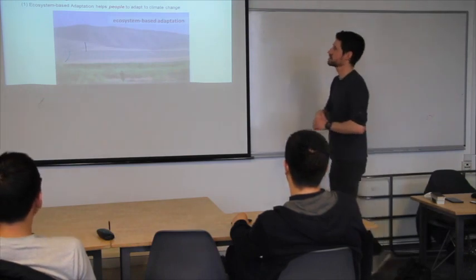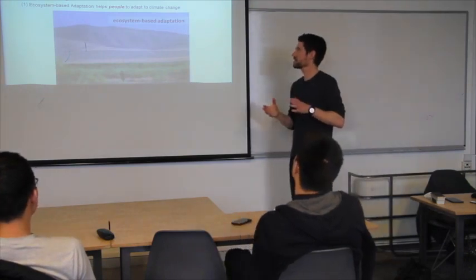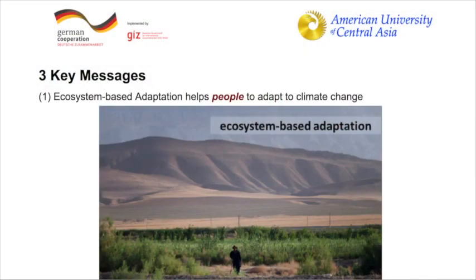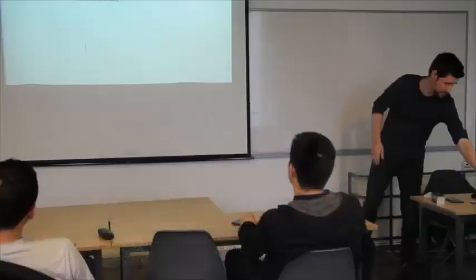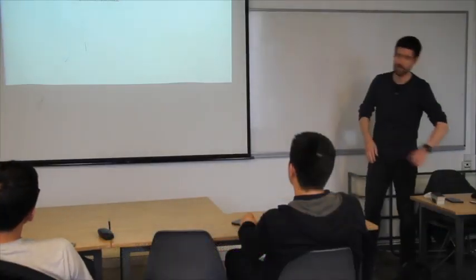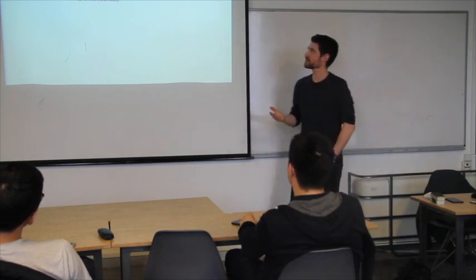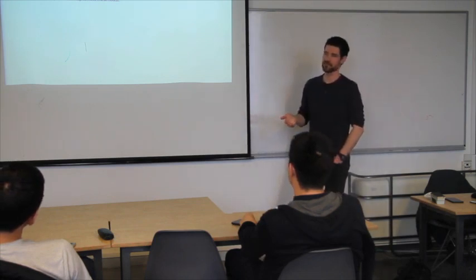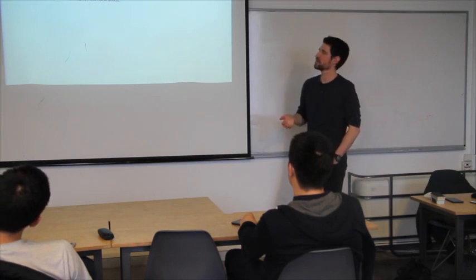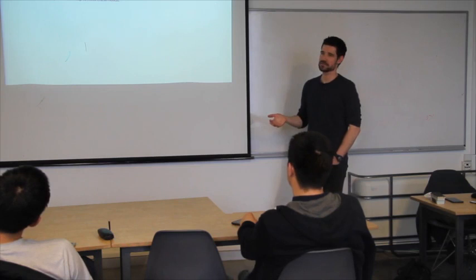And the third one is really that in the center are the people. And this approach wants to help people adapt to climate change. So this approach always begins with identifying also the vulnerabilities, yeah, of the people in a changing climate. And then you basically ask how ecosystems can help to meet also these needs of the people.